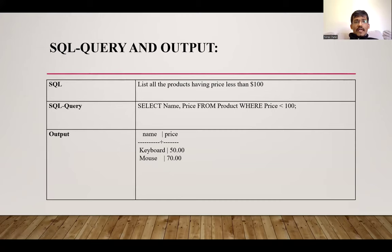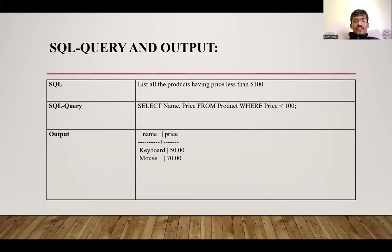Here we are going to discuss about the SQL query and output. In the case of SQL queries, we are going to use the PSQL shell. We have to find the products whose price is under 100. We put the query: SELECT name, price FROM product WHERE price < 100. After that, we get the output showing name and price — for example, keyboard at 50 and mouse at 70, both coming under 100.